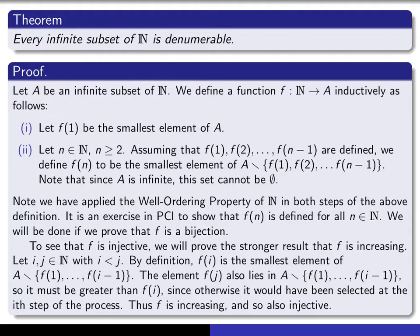So now we just have to prove that f is injective and surjective. To see that f is injective, we're actually going to prove the stronger result that f is, in fact, increasing. Give yourself an i and a j in the natural numbers and assume that i < j. Now, f(i) is defined to be the smallest element of the subset of A with certain elements removed. Since j is bigger than i, f(j) has not yet been removed at that stage.